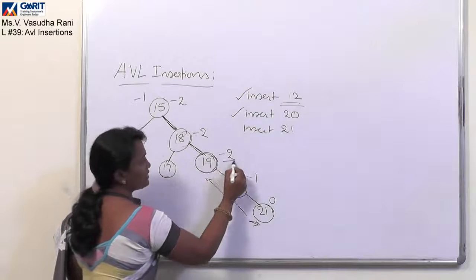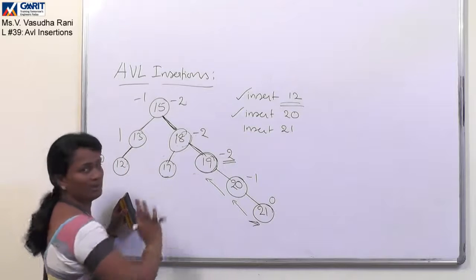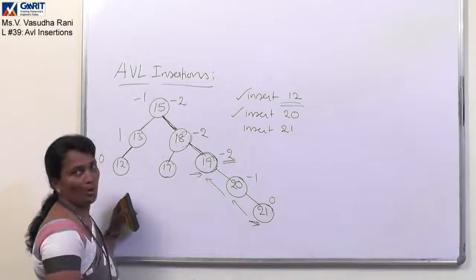So here this 19 is the node. First it is failing with the, it is the low level node. It is failing with the balanced condition. So here we have to take a call.